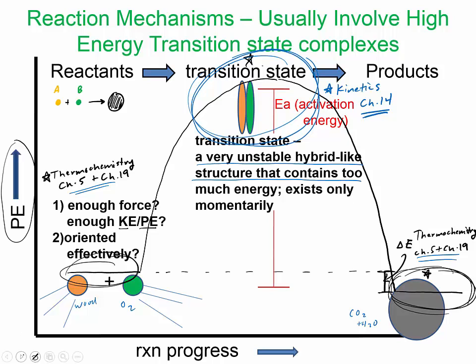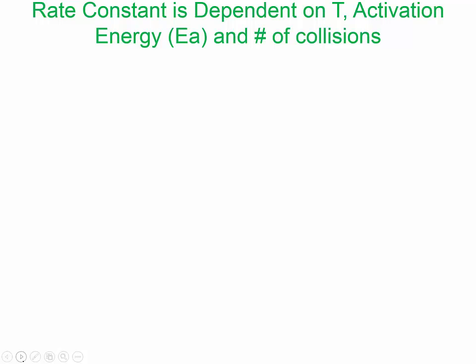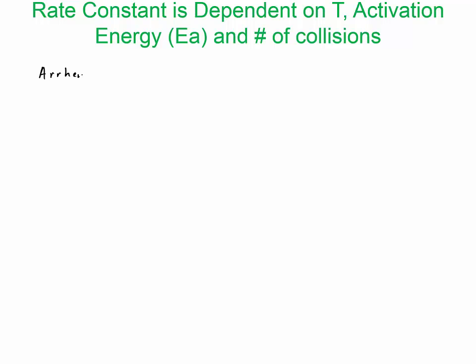I'm going to go on to one more slide covering the temperature dependence on the energy profile. It's given by an equation called the Arrhenius equation. The Arrhenius equation looks like this: the rate constant k is determined by the factor Z times P, times the exponential of negative activation energy divided by RT.